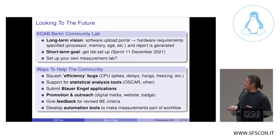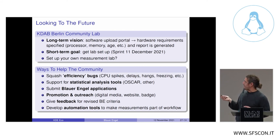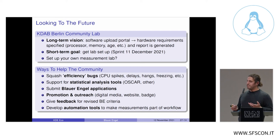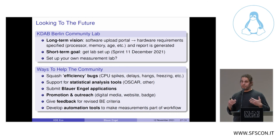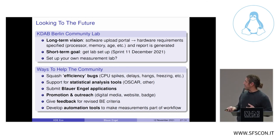There are many other ways to help. We've started labeling efficiency bugs in KDE Bugzilla — those are bugs related to CPU spikes, delays, hangs, etc. You can also provide support for statistical analysis tools, submit Blauer Engel applications, help with promotion and outreach, give feedback for revised criteria, and help develop automation tools.